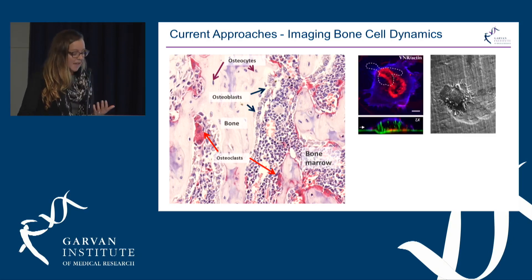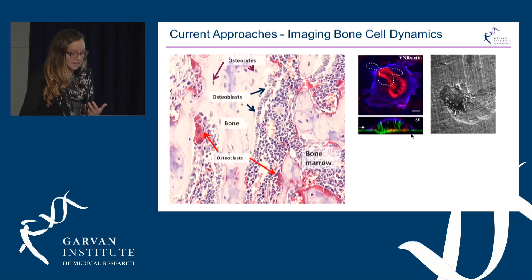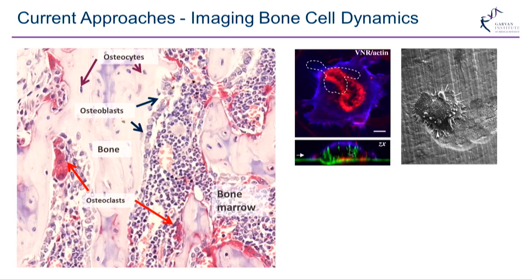To really understand how these cells behave, we've developed techniques where we take cells out of the bone environment and grow them in plastic. This allows us to use fluorescent or coloured labels to look inside single cells and see how they function specifically. We can also grow these cells on artificial pieces of bone to watch osteoclasts resorbing bone. But as you can appreciate, these techniques are quite limiting — histology sections are only two-dimensional, it's only static information, and cells grown in plastic dishes are taken out of their normal environment, lacking a lot of information.